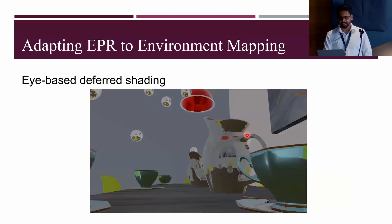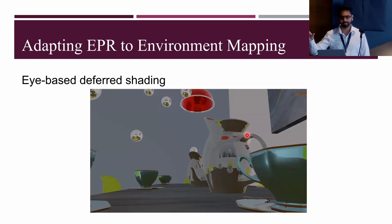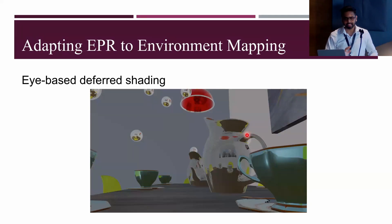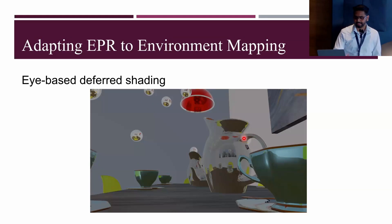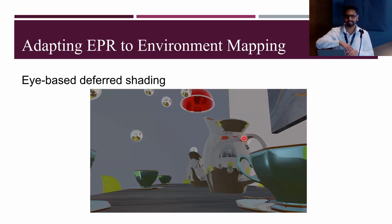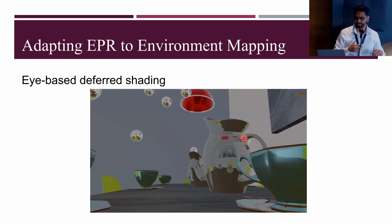Our EPR off-screen buffers are G-buffers — we store only references to points and point shading data rather than RGB colors, enabling deferred shading. Rather than deferring all shading after splatting, we realize additional efficiency by deferring shading even further to the final eye-pass deferred shading.